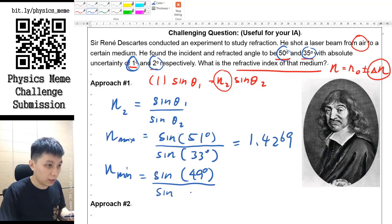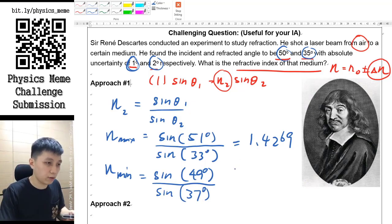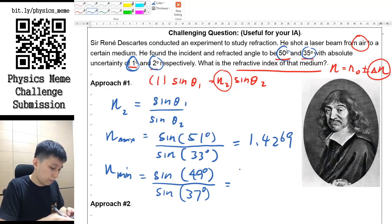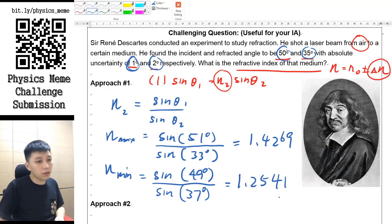And then go with sin 37 degrees so that the base of the fraction is bigger, then obviously the whole number will be smaller. Again apply your calculator, you will get the answer 1.2541.